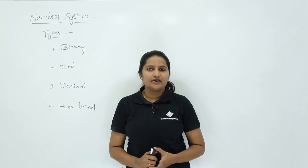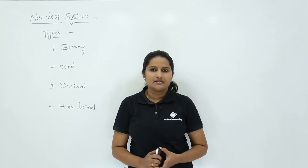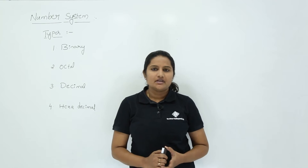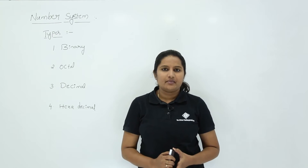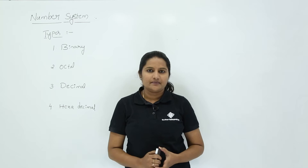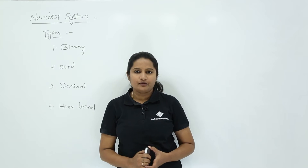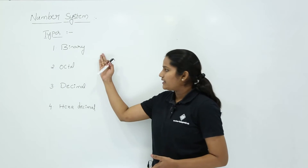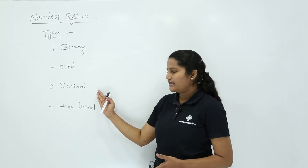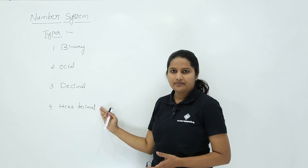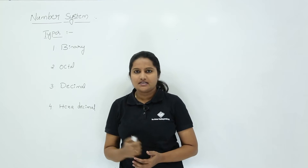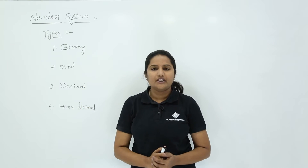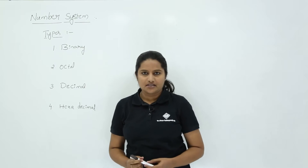In this class we are going to discuss number systems and its types. Generally number systems are used to define the magnitude of any quantity. Basically we have 4 types of number systems: binary, octal, decimal, and hexadecimal. When discussing these types of number systems, we need to get knowledge about the base or radix of a number system.